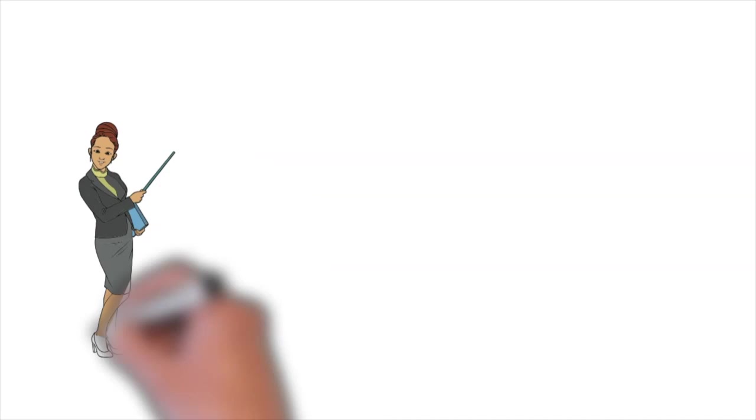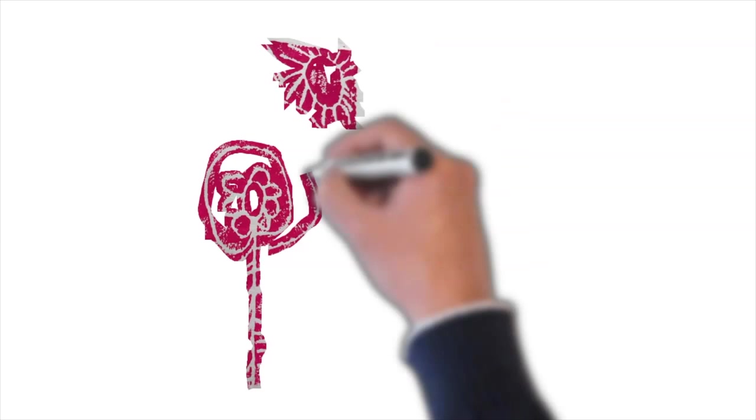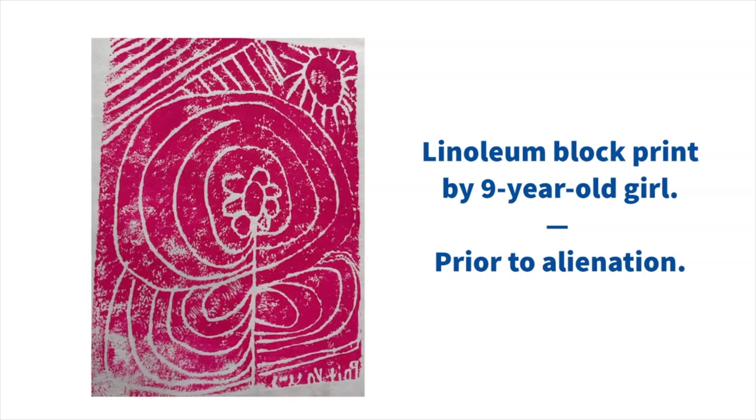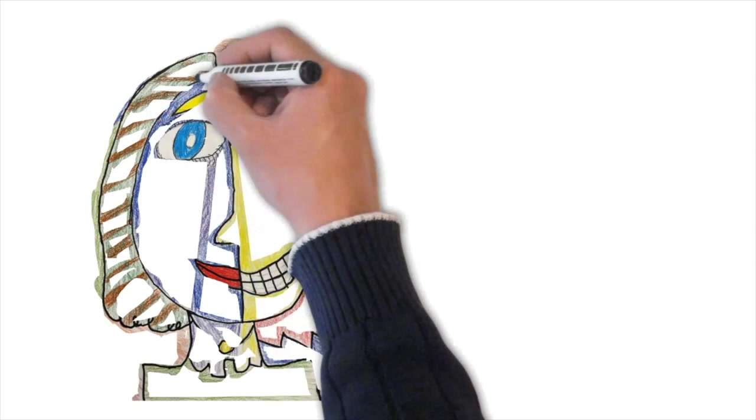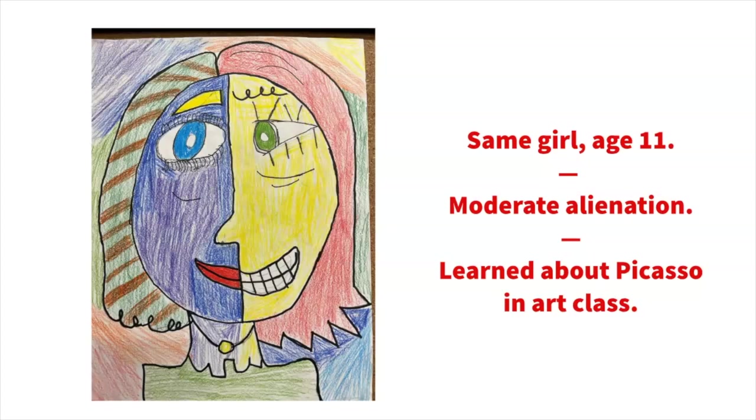Moderate level of parental alienation. This is a linoleum block print by a nine-year-old girl before she became alienated. She drew the sun and a flower. The same girl, age 11, has now become moderately alienated. She was studying Picasso in art class and she drew a picture displaying internal conflict.